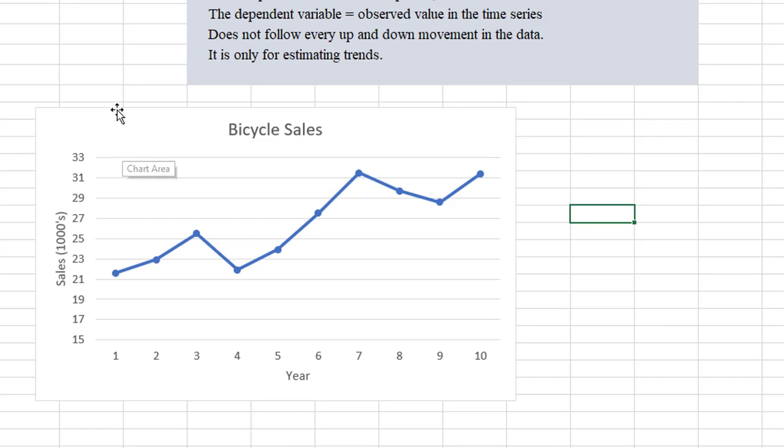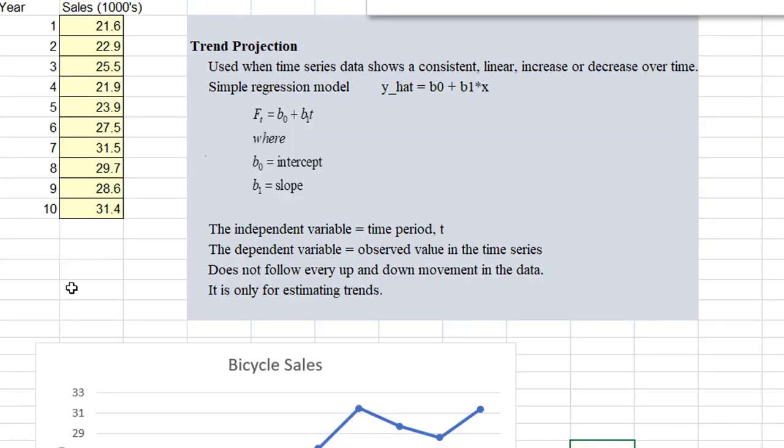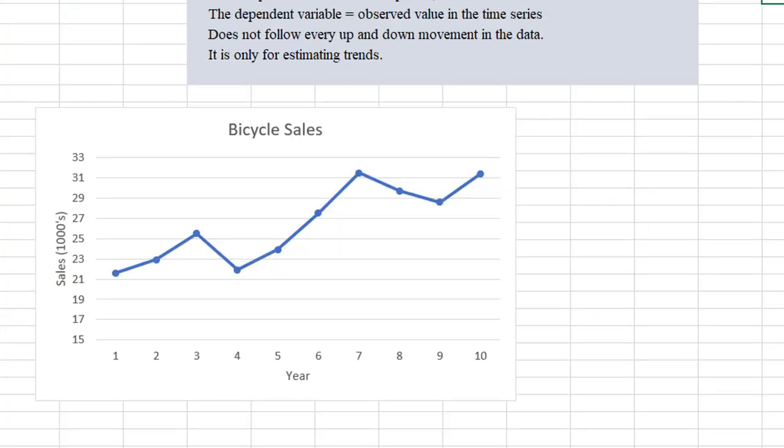You already know how to find the intercept and the slope for a regression model. For instance, you could insert a trend line here and ask for the corresponding equation. Also you could use Excel functions like intercept and the slope to find the values. And another way is to use Excel's data analysis tool pack to run regression. Let's do a quick review of these methods with this example.